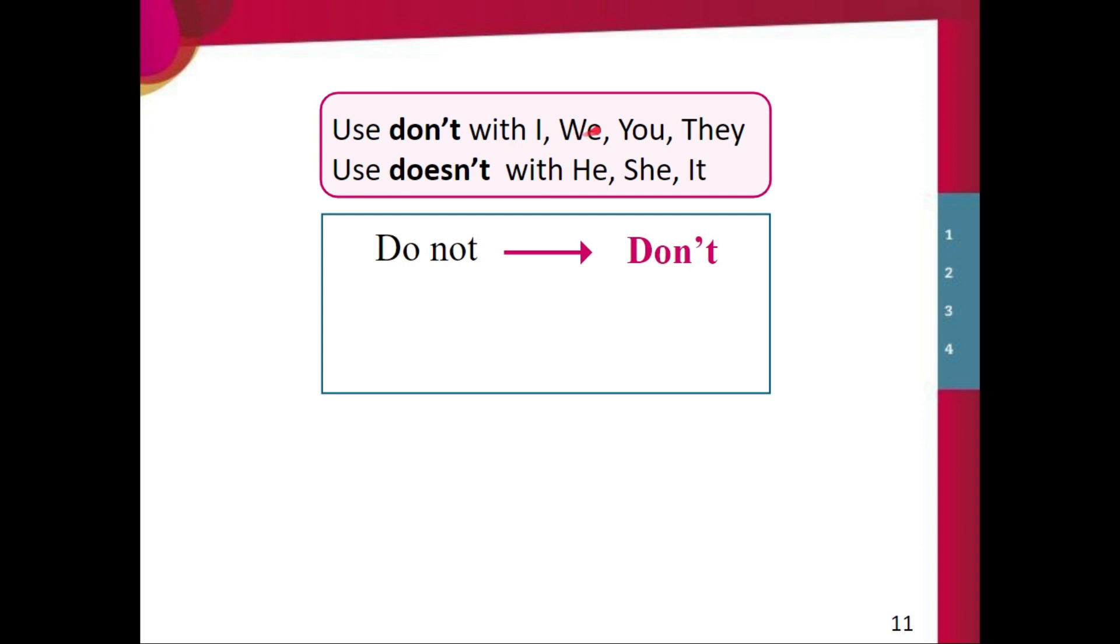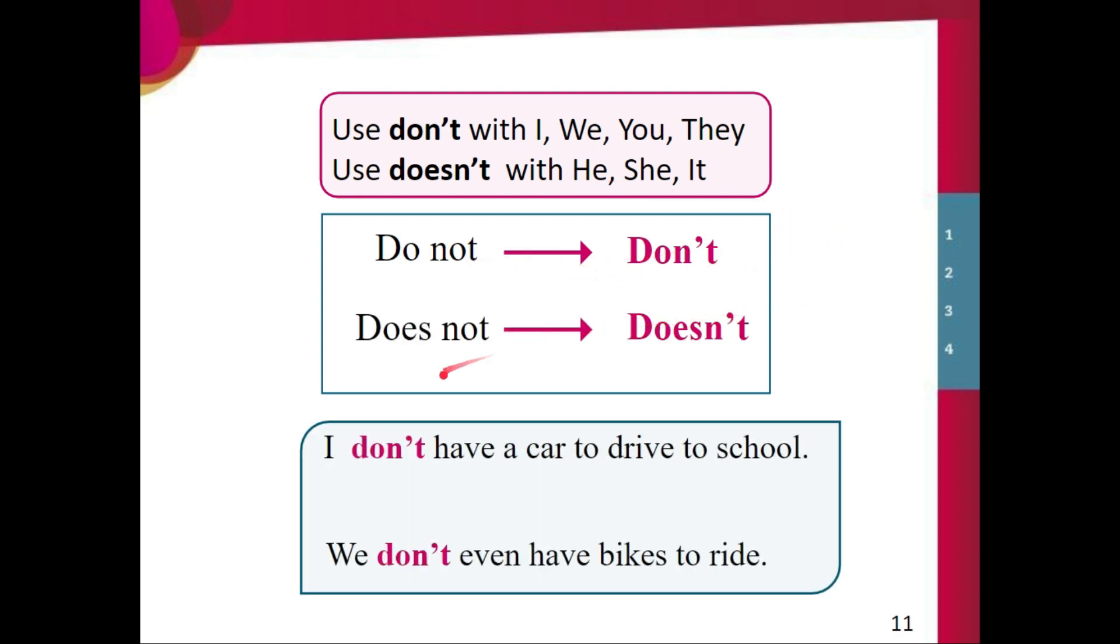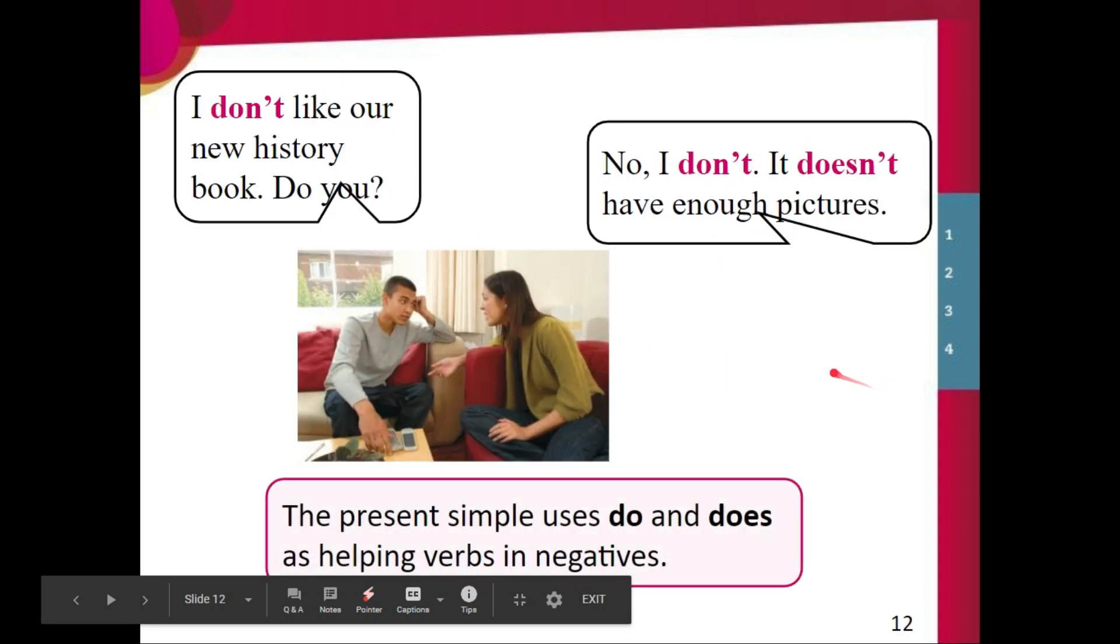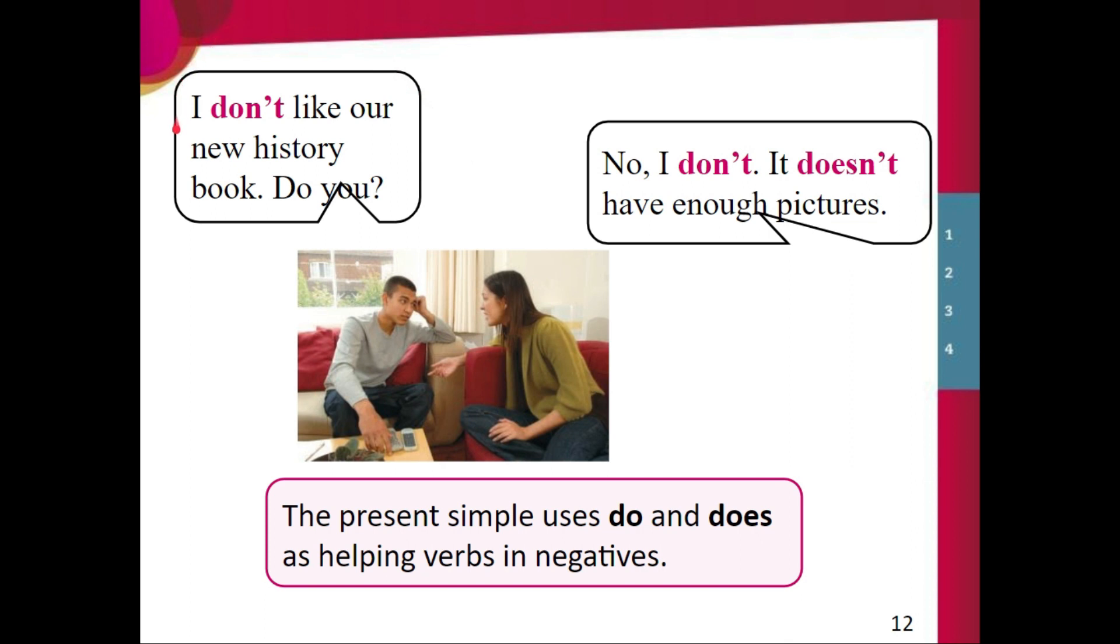Now remember with I, we, you, they, we use don't and we use doesn't with he, she, it. So we have do not becomes don't. Like I don't have a car to drive to school. And does not becomes doesn't. My roommate doesn't have a car. So remember the present simple uses do and does as helping verbs in negatives and in questions. Here we have I don't like our new history book. Do you? No, I don't. It doesn't have enough pictures. And that's it for contractions.